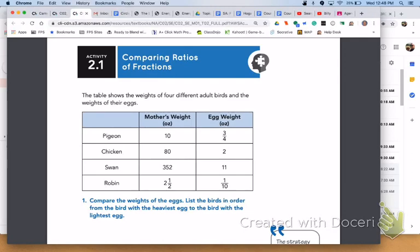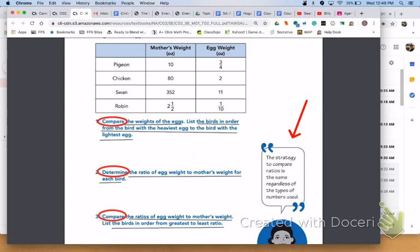Please turn to page 61, Activity 2.1, Comparing Ratios of Fractions. The table shows the weights of 4 different adult birds and the weights of their eggs. Please note that the strategy to compare ratios is the same regardless of the types of numbers used. Please answer number 1, 2, and 3 with your group.